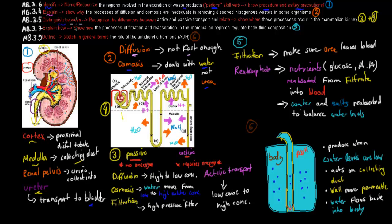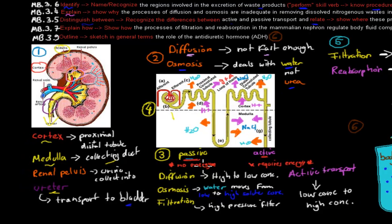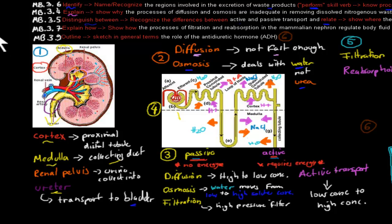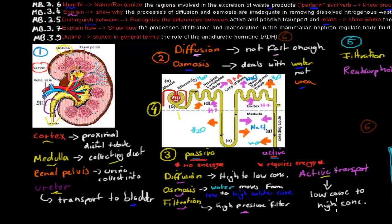The next dot point says 'distinguish between' — recognize the difference between active and passive transport — and 'relate' — show where these processes occur in the mammalian kidney. Passive transport requires no energy, while active transport requires energy. Examples of passive processes in the kidney include diffusion (movement from high to low concentration), osmosis (water moving from low to high solute concentration across a semipermeable membrane), and filtration (high pressure filtering into the nephron). Active transport is when something moves from low concentration to high concentration using energy.